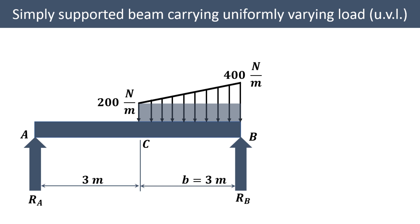We will convert this arrangement into the UDL and UVL form. If we consider only the lower part of the distribution, it becomes uniformly distributed load and the upper part becomes the uniformly varying load. The rectangular part is 200 Newton per meter, and since the total is 400, we get 400 minus 200, so the height of the triangular UVL distribution is 200 Newton per meter, varying from 0 to 200.